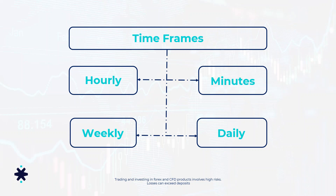Regarding time frames: our StarTrader platform has many options — four hours, two hours, one day, weekly, monthly. Practically, the most used are hourly, minutes, weekly, and daily. Each point on the chart covers one time frame — whether one hour, one minute, one week, or one day. So for that time frame, we have the open price, close price, high, and low. This is important to remember, especially when we discuss candlesticks.